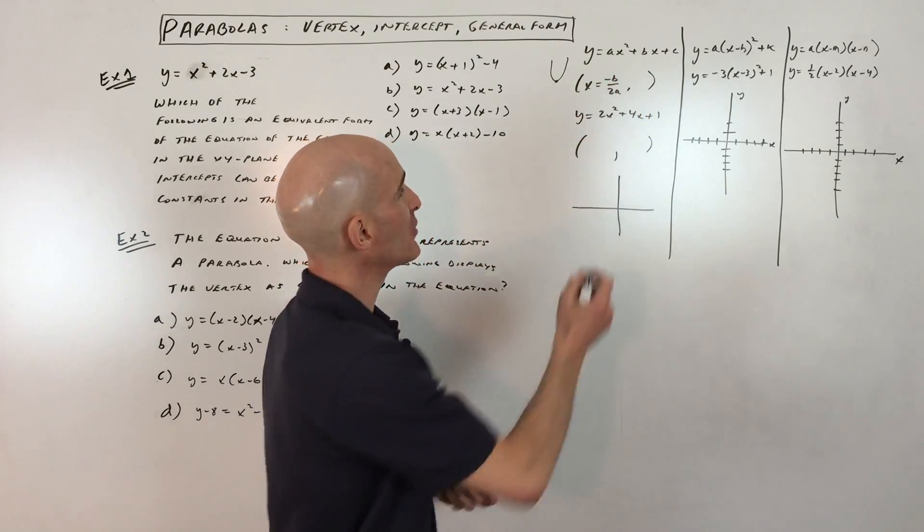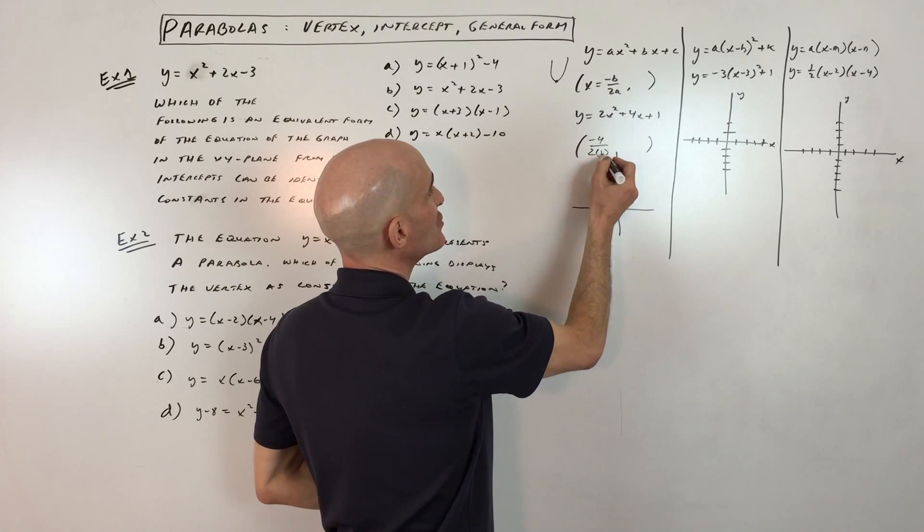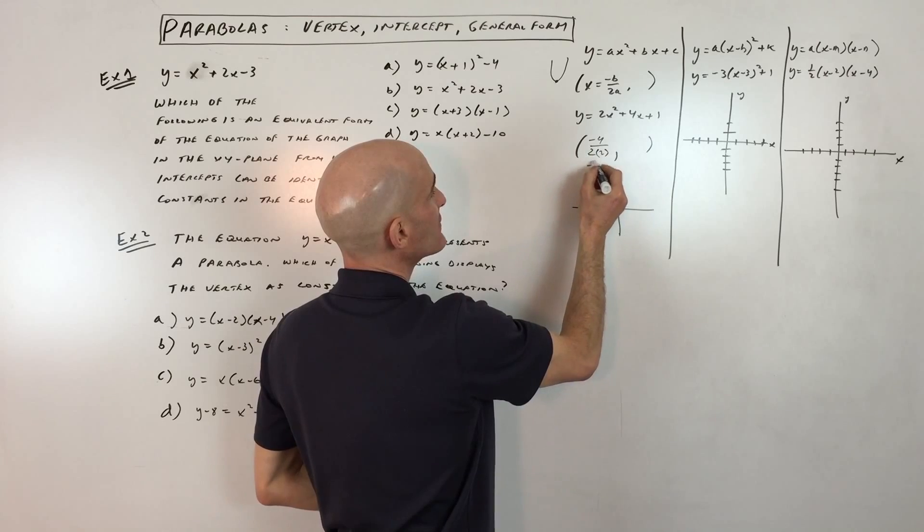So for this example here, I would do the opposite of b, which is negative 4, over 2 times a, which is 2, and so negative 4 over 4 gives us negative 1.